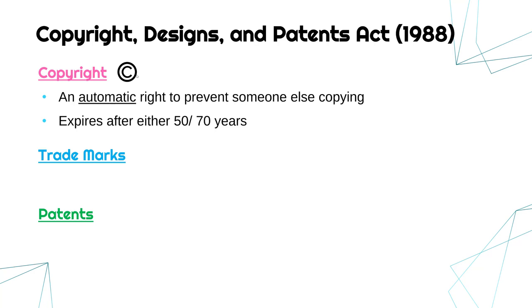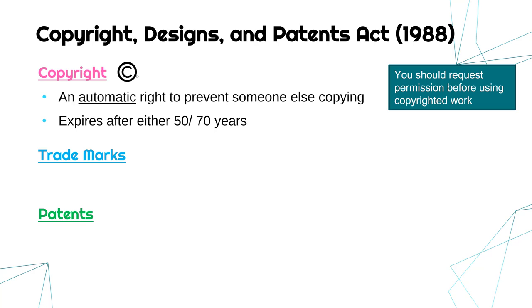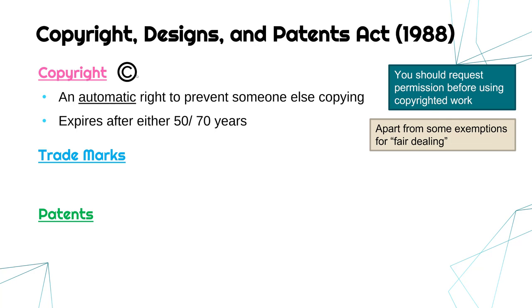Copyright expires after a set number of years — about 50 or 70, depending on what it is. That's why really old books can be republished without any copyright infringement. The key gist of copyright is: if you see something with a copyright symbol, if you are being totally legal, you should request permission before using it. Either they'll say yes, they might say yes and charge you, or they say no. There are a couple of exemptions — what are called fair dealings or fair use. For example, playing a song for five seconds is probably okay, but playing it for two minutes is probably not. There are also some exemptions for education, so a teacher might be able to show their class a poem, but they can't photocopy an entire book for their class.